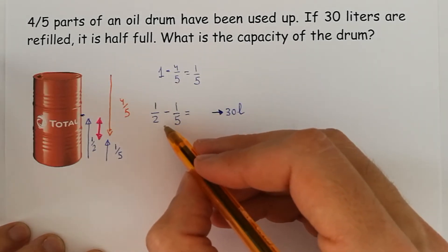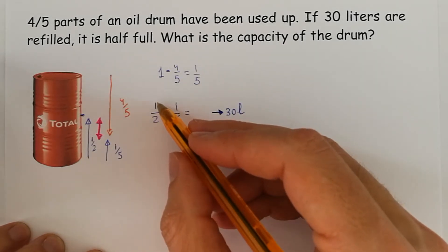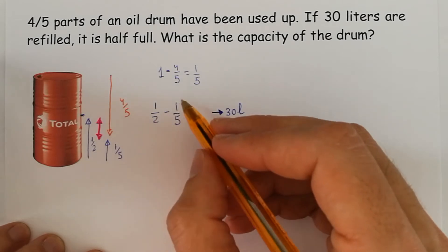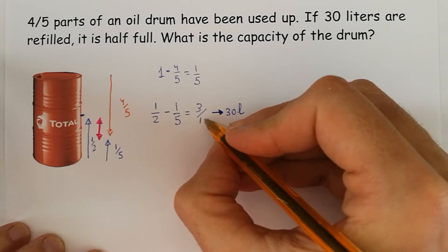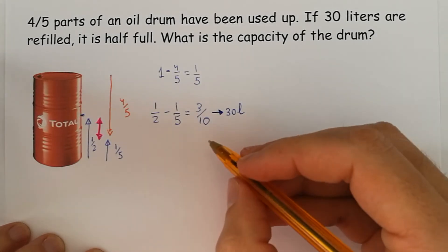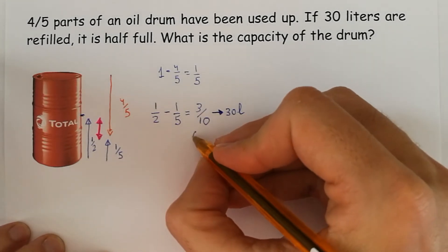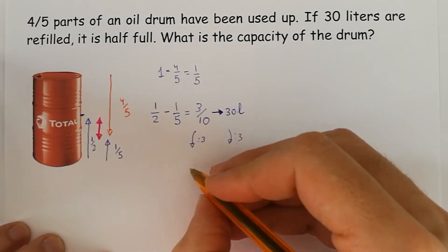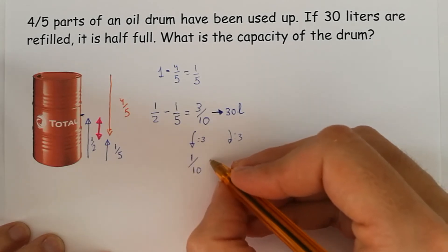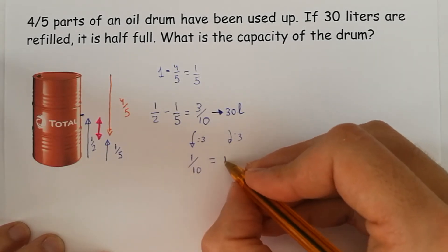Well, the common denominator is 10. We get 5 over 10 minus 2 over 10, so 3 tenths. Now, we reduce to unity, we divide by 3 in both sides, and we get that one tenth is the same as 10 liters.